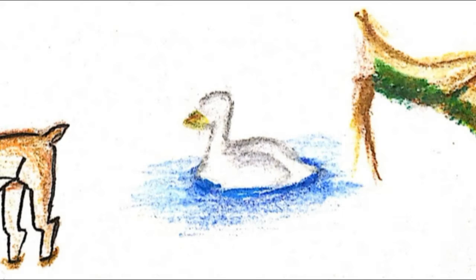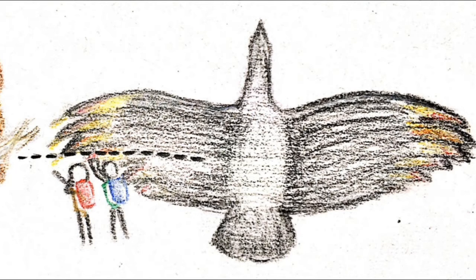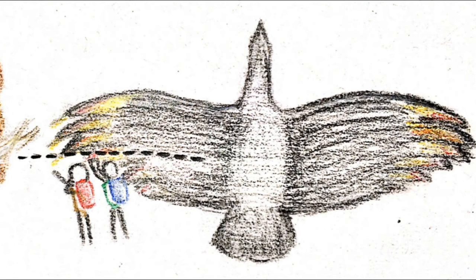Birds flourished too, including ducks, geese and hawks. Large birds with 25-foot wingspans were also present, like the teratorn birds.